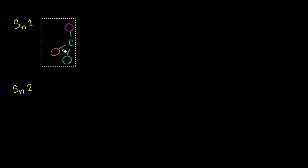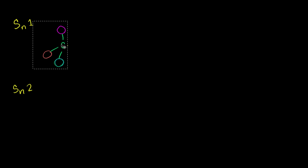As a bit of a review: in an SN1 reaction, you have some carbon attached to three things — they could be other carbons, CH3, hydrogens, or other things. And then it's also attached to a leaving group, shown here in pink. You also have a nucleophile floating around with one excess electron and a negative charge.